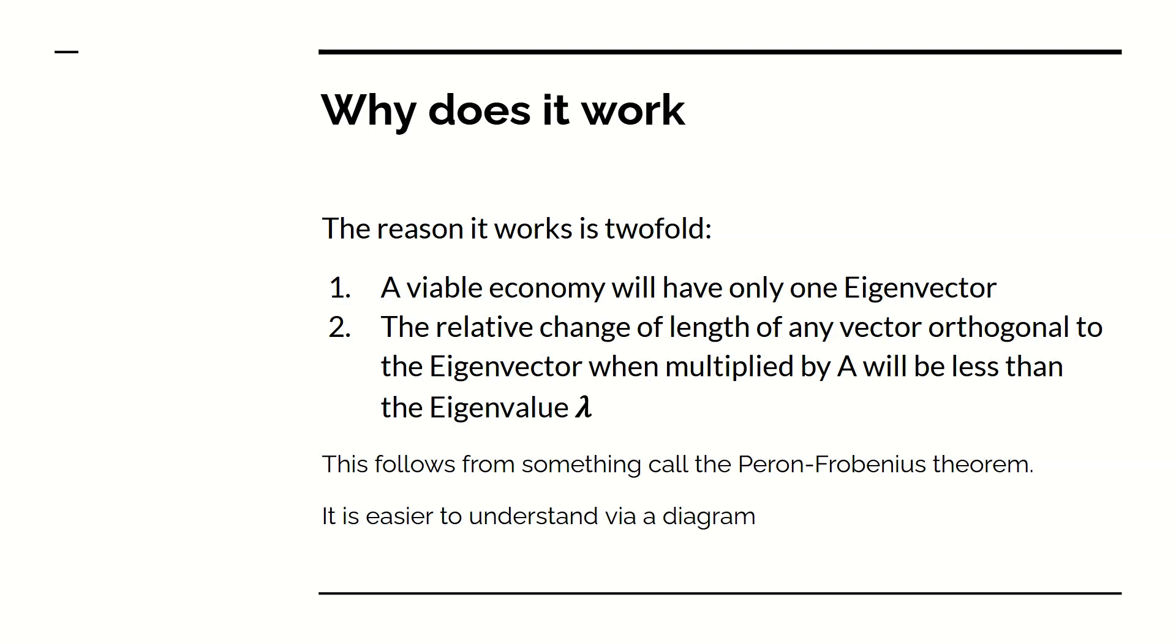And there's another property of eigenvectors is that any vector that is at right angles to the eigenvector, that is, independent of the eigenvector, when multiplied by A, will be scaled by less than lambda. This is the Perron-Frobenius theorem.